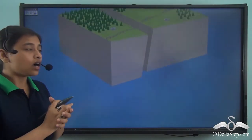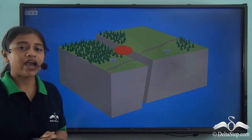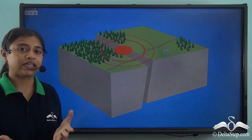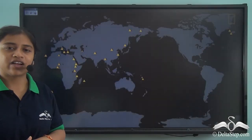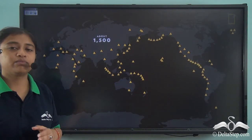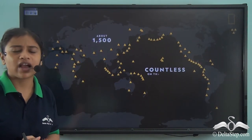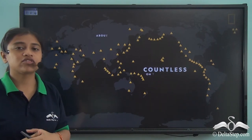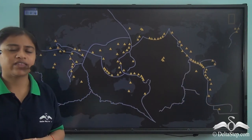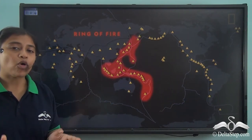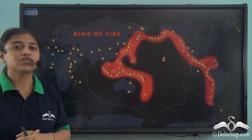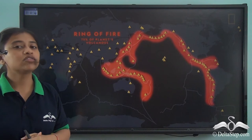Where the earthquake is strongest at the surface, that point is called the epicentre. From the epicentre, waves of energy are distributed in the surrounding area. Volcanic eruptions are another natural disaster. There are 1,500 volcanoes on the earth's surface, countless of which are also on the ocean floor. These volcanoes are generally found on the boundaries of tectonic plates, and an important example is the Ring of Fire, where 75% of the earth's volcanoes are found. Volcanic eruptions can also lead to earthquakes.